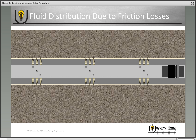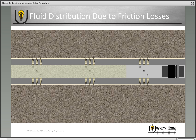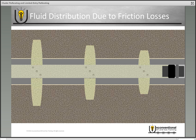The reality is that friction losses play a huge role in how fluid actually distributes through each cluster. As fluid flows down the pipe, the further it has to travel, the more energy is lost to friction. The top set of perforations has less distance to travel and therefore less friction losses than the bottom set. So the top set receives the most fluid, and the bottom set, having the most friction losses, takes the least amount of fluid.